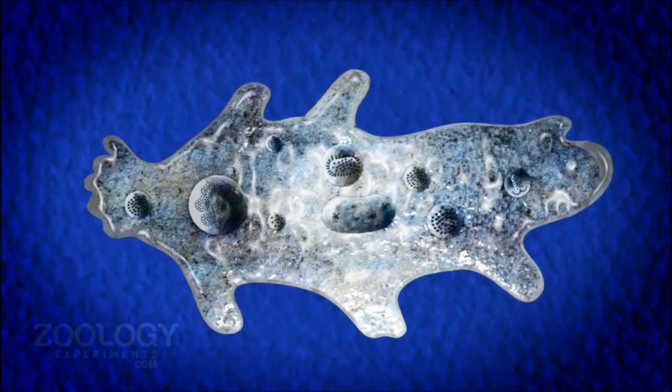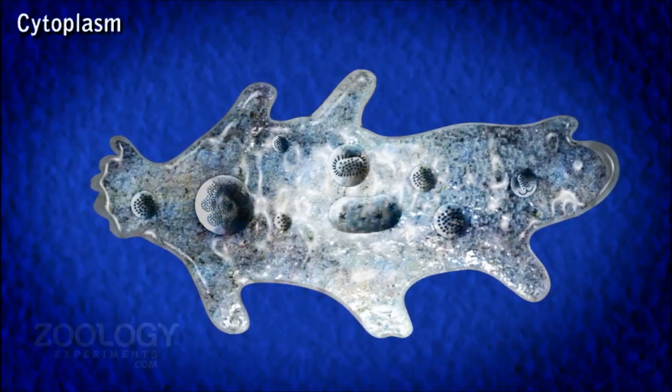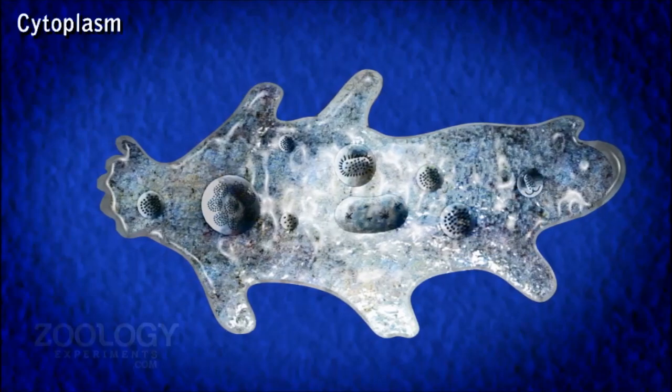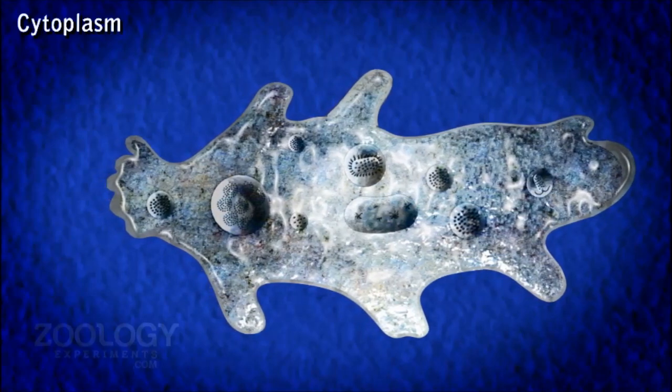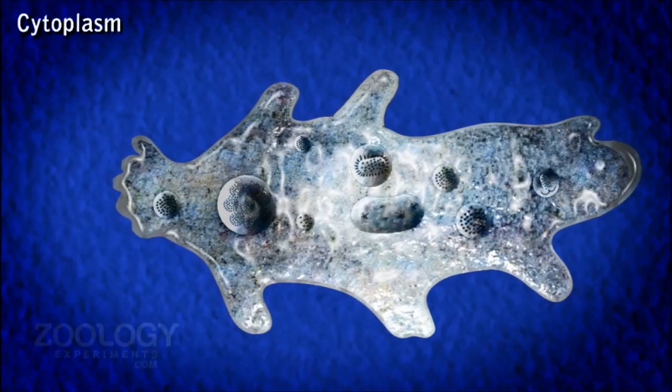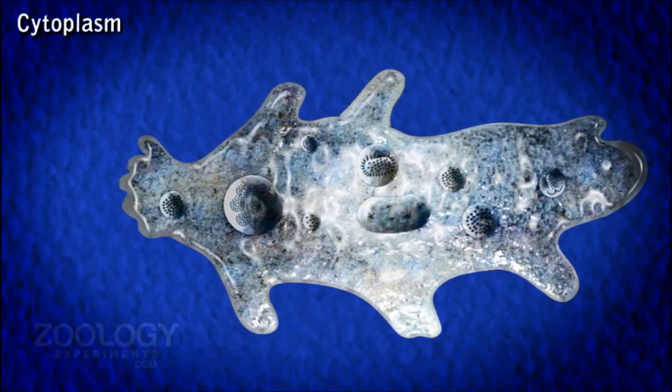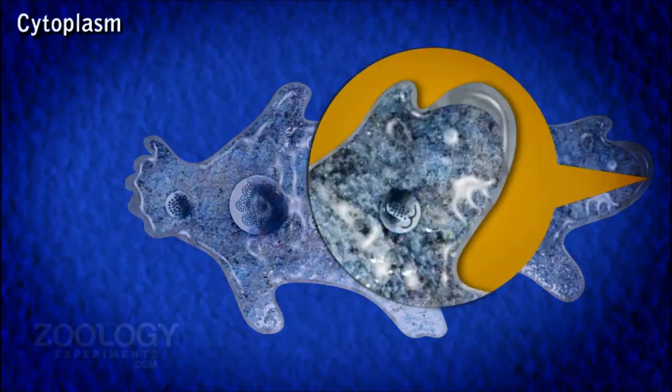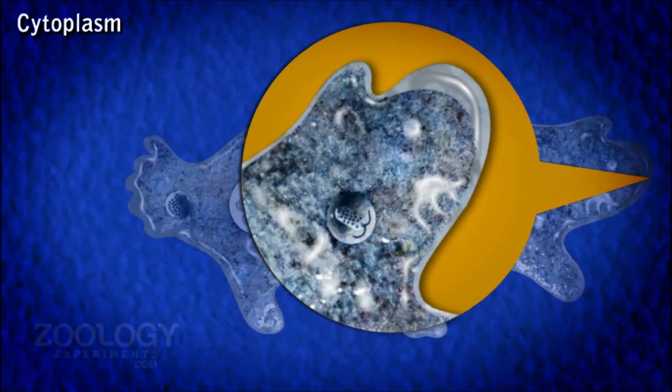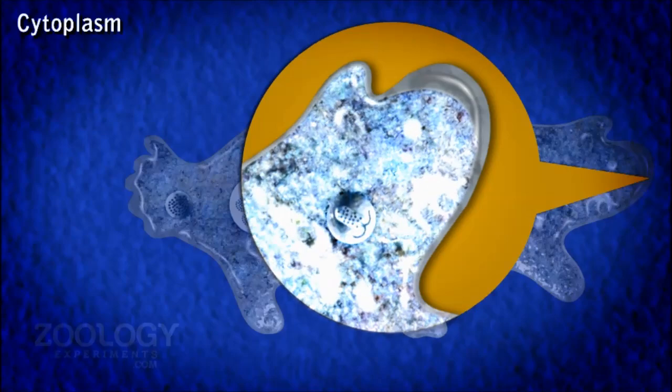Cytoplasm. Within the plasma lemma, the dense cytoplasm contains several organelles. It is differentiated into two distinct zones: an outer ectoplasm and an inner endoplasm.